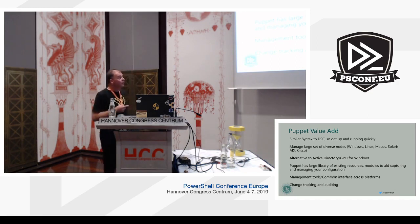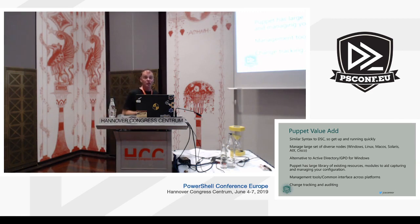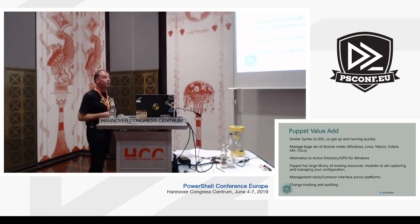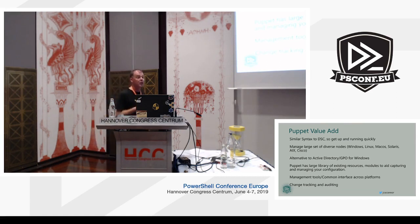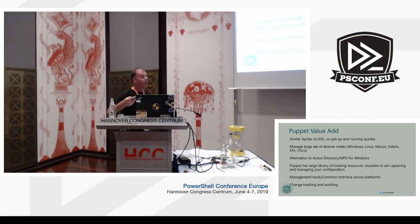Puppet comes with a very large library of existing resources, also called modules, to aid capturing and managing your configuration. There are modules out there in the Forge you can use, and you can also write your own. It gives you common management tools and a common interface across all platforms. The big difference between it and DSC is it gives you change tracking and auditing — yes there is some level of auditing in DSC, but Puppet gives you a much more powerful facility that works right across your domain.